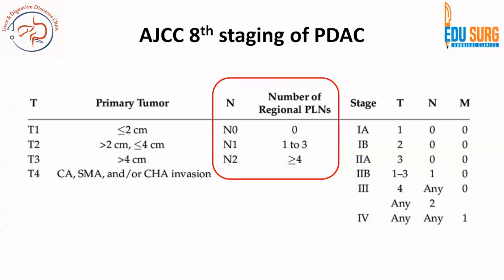Coming to the AJCC 8th edition for staging of cancers involving the pancreas, we know that the tumor staging is now simplified. The N1 and N2 is different between previous staging and this staging. It is simply based on the number of nodes. Unlike colon where node-positive disease is stage 3, here node-positive disease starts from stage 2B. T4 is stage 3, N2 is stage 3. So 1 to 3 nodes is N1, and 4 or more nodes is N2.